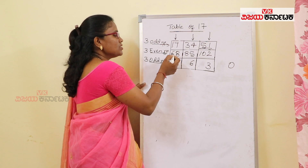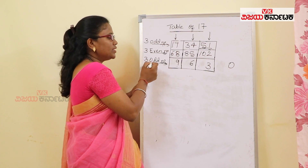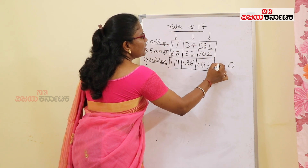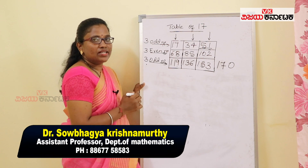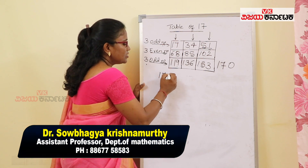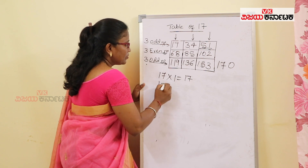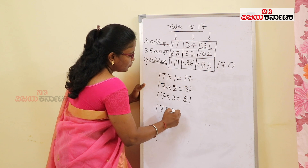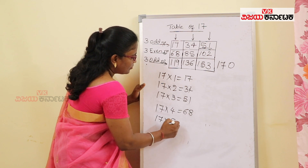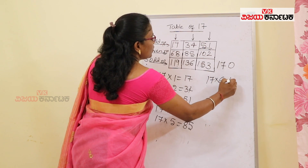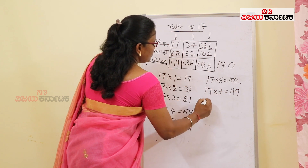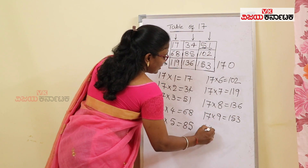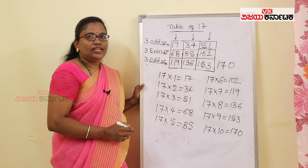In the third row, consider 3 odd numbers. The next odd numbers after 10 are 11, 13, 15, then 17. So if you observe this table, the values indicate the 17 times table: 17×1=17, 17×2=34, 17×3=51, 17×4=68, 17×5=85, 17×6=102, 17×7=119, 17×8=136, 17×9=153, 17×10=170.